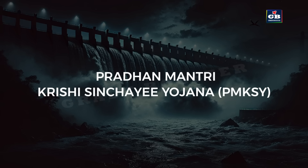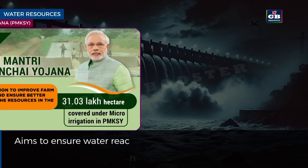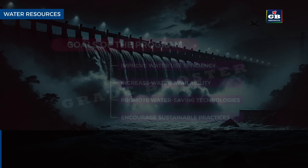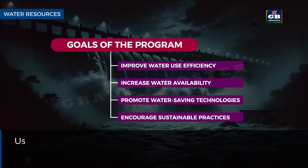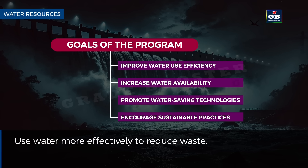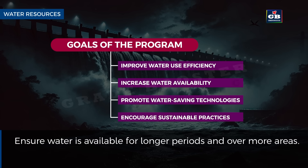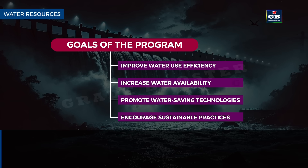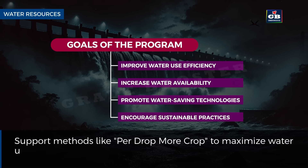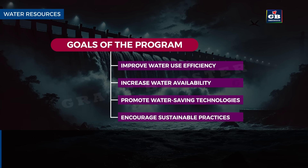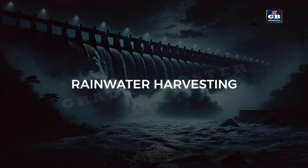Pradhan Mantri Krishi Sinchai Yojana (PM-KSY) aims to ensure water reaches every farm — 'Har Khet Ko Paani' — and expands the area under irrigation for better crop growth. The goals include: improving water use efficiency to reduce waste; increasing water availability over longer periods and more areas; promoting water-saving technologies like drip irrigation for more crop per drop; and encouraging sustainable long-term water conservation methods, including rainwater harvesting.